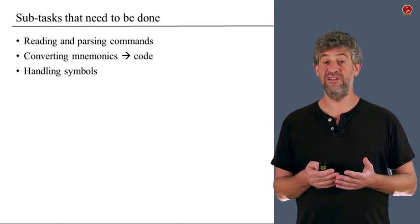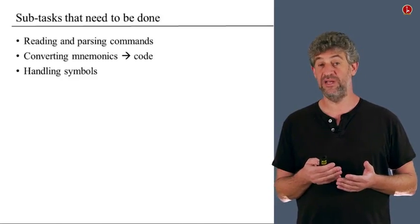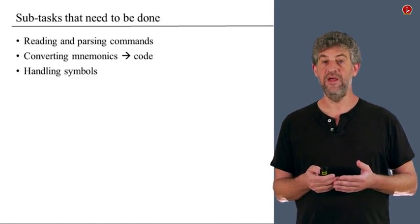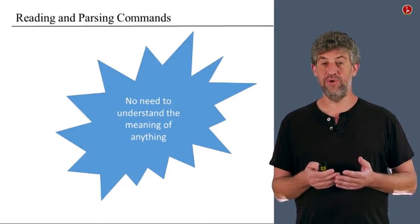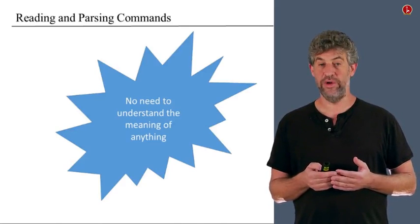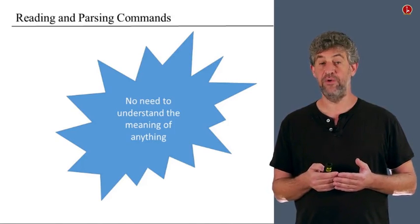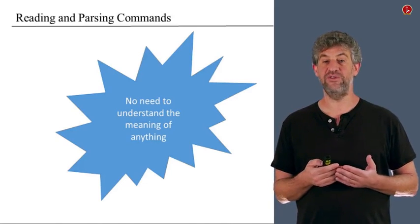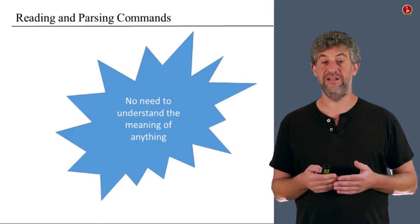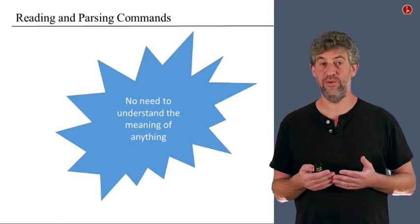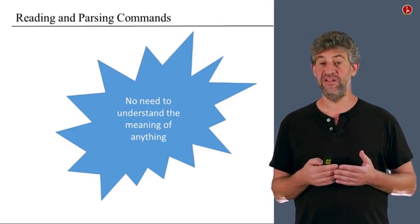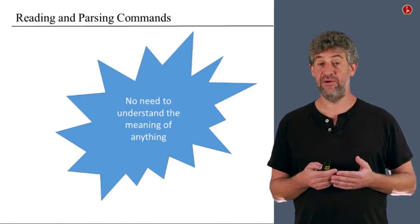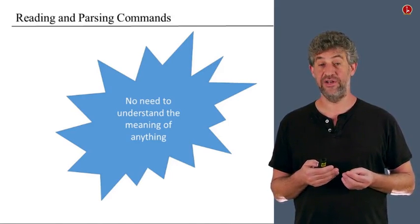Once we talk about these three different components, you'll see that the rest of the program using these components — which we think of as classes — doesn't have much left to be done. Let's start with the first part: reading and parsing commands. The most important thing to think about is what we don't need to worry about in this part. The parser only needs to read the input and break it into its parts. It doesn't need to understand what the commands mean, how they're translated to machine language, or what the symbols or their addresses are. It only needs to understand the format of the input language.